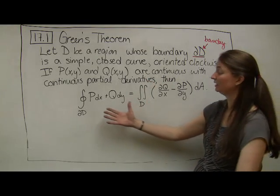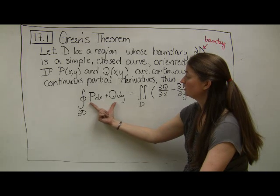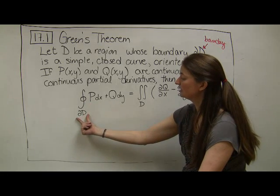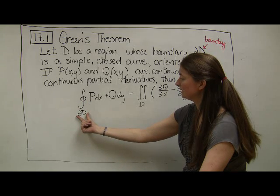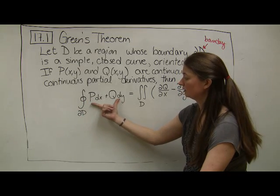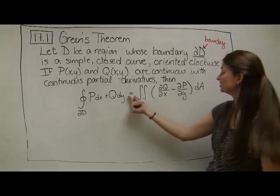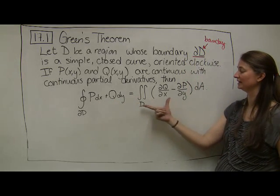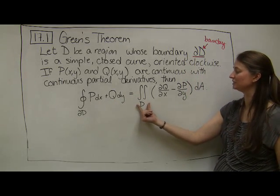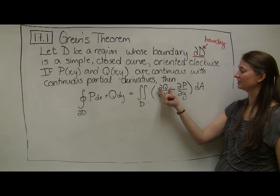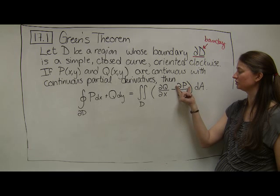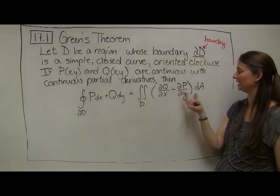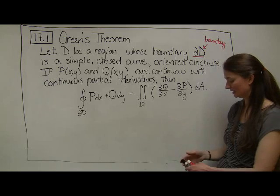And by crazy, I mean cool. This is saying that the line integral along the boundary of D of our vector field is going to be exactly equal to the double integral over the region D of the partial derivative of Q with respect to X minus the partial derivative of P with respect to Y dA. What is this even saying?